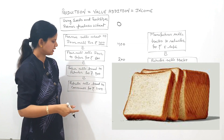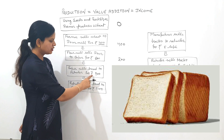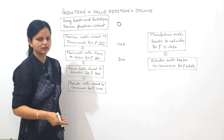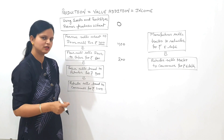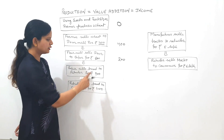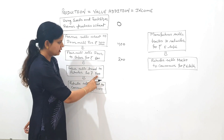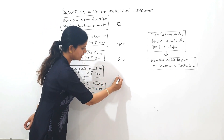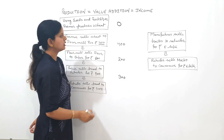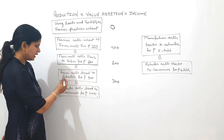The baker converts the flour into bread and sells it to the retailer for ₹900. He purchased it for ₹600 but sells for ₹900 because he converted flour into the more useful product bread. That's why he has done value addition of ₹300 — we can say he has done production of ₹300.